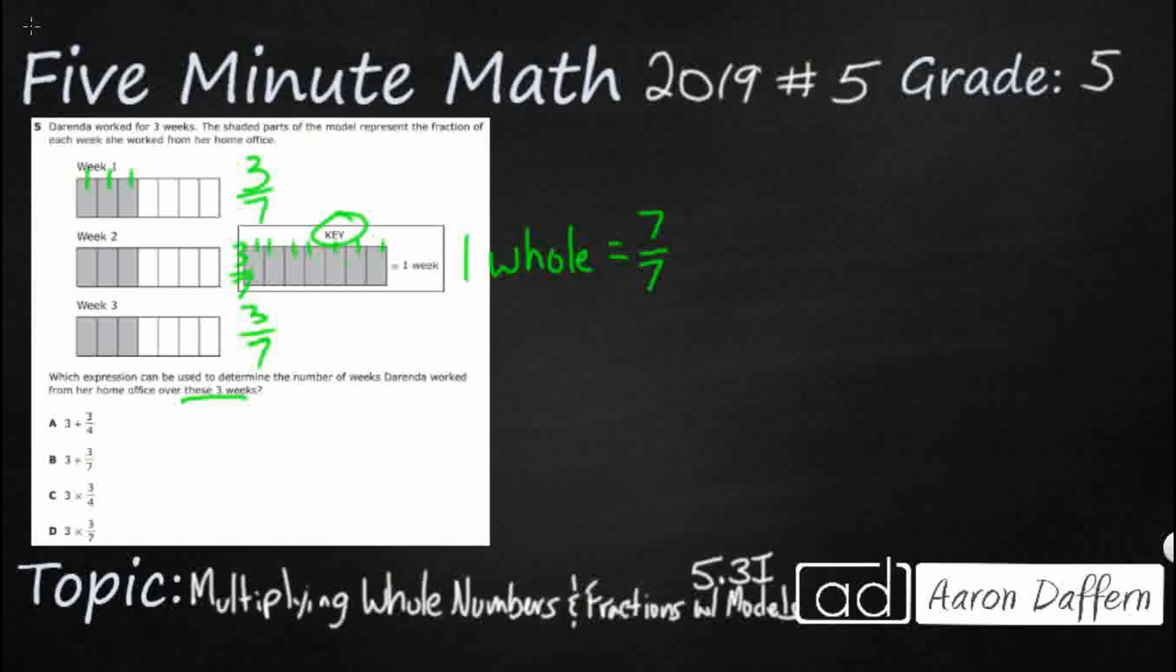So if we wanted to, we could just add them up. Three sevenths plus three sevenths plus three sevenths. But that is not one of our options. But take a look at what we have right here. Each of these three are exactly the same. You could say they are equal groups.